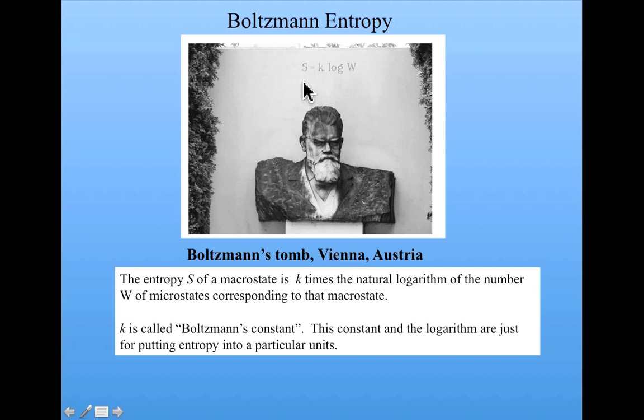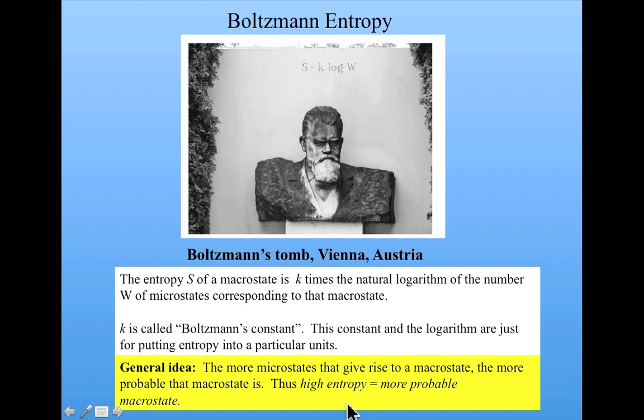So entropy is a measure of a macrostate, and it measures how many microstates correspond to that macrostate. So the general idea is that the more microstates that give rise to a macrostate, the more probable that macrostate is. So our slot machine, the macrostate of lose, was much more probable than the macrostate of win. And we saw that many more microstates corresponded to the lose macrostate than the win macrostate.